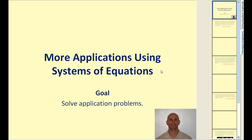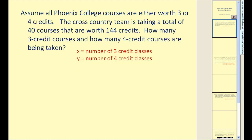Okay, welcome back. Today we'll be talking about applications using systems of equations. So let's go ahead and take a look at our first example. Assume all Phoenix College courses are either worth three or four credits. The cross country team is taking a total of forty courses that are worth 144 credits. How many three credit courses and how many four credit courses are being taken? So the first thing is we need to identify our unknowns. Let's let x equal the number of three credit classes and y equal the number of four credit classes.